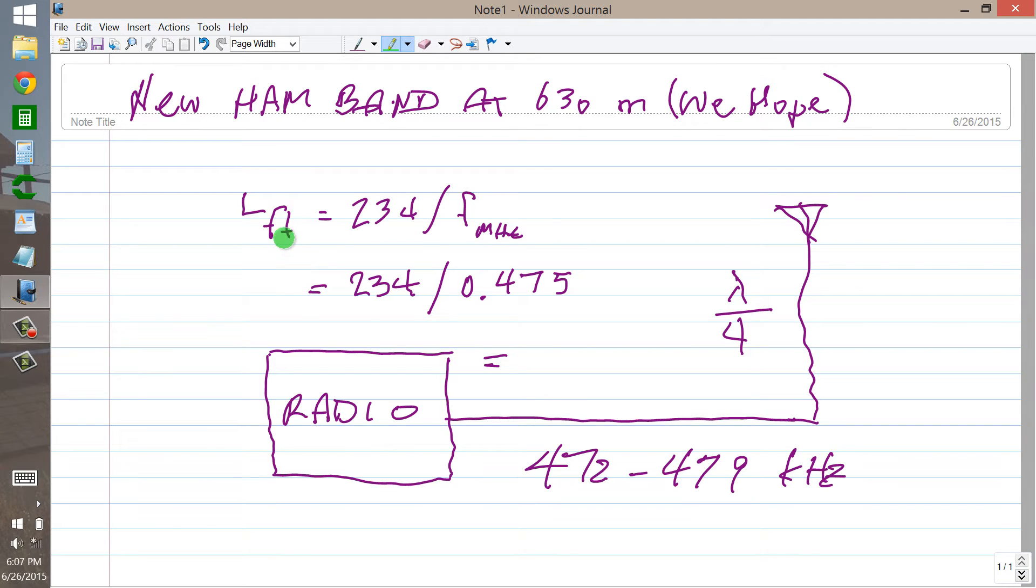The length in feet of an antenna for a quarter wavelength is 234 divided by the frequency in megahertz, which in this case is 234 divided by 0.475, which lies roughly in the middle of this 472 to 479 kilohertz application, 7 kilohertz wide.